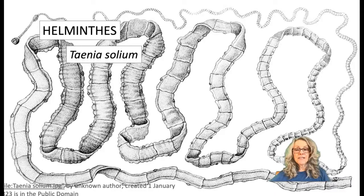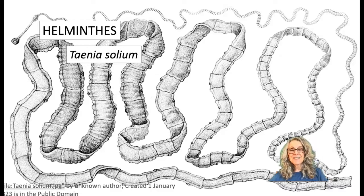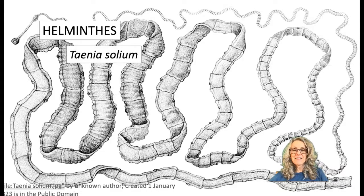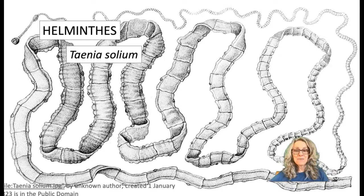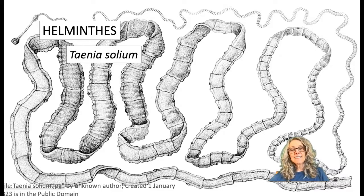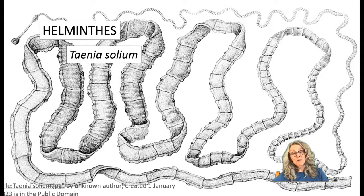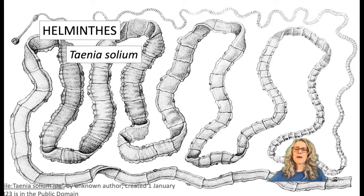And they have the helminths, or the parasitic worms, which is the category of microorganisms that I find to be most disgusting. This is a picture of the tapeworm, Taenia solium. Taenia solium can be two to three millimeters long, so that's pretty small, but can also grow up to eight meters.